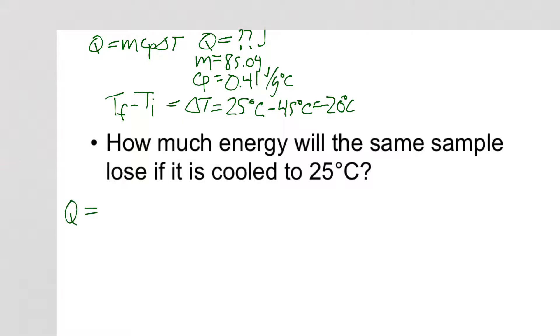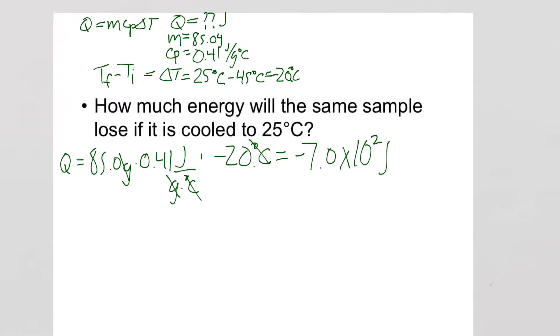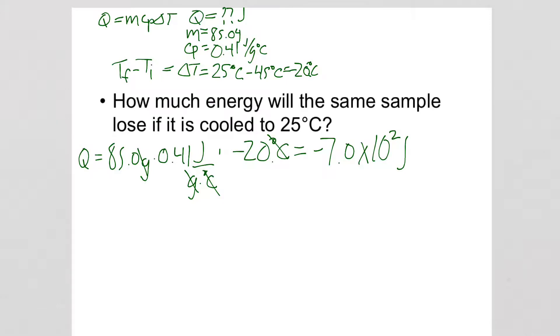Now let's input this information in. Q is M, 85 grams, times my Cp, 0.41 joules over gram degrees Celsius, times my change in temperature, which is a negative 20 degrees Celsius. You can see in the numerators and denominator, the Celsius cancels, grams cancels, leaving me only in joules. I'm going to get my significant figures in there. So that would leave me at around negative 7 times 10 to the second joules. The negative when it refers to energy just means loss. So what was the energy change for the sample? It was a negative 700 joules. You can also say 700 joules were lost. Those are equally fine, but when we look at two systems coming together, it does play a pretty big role in how those things are done.